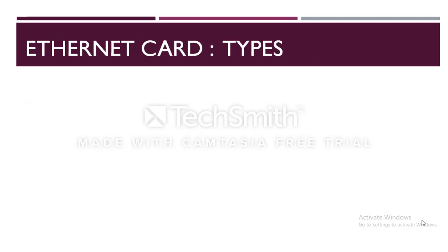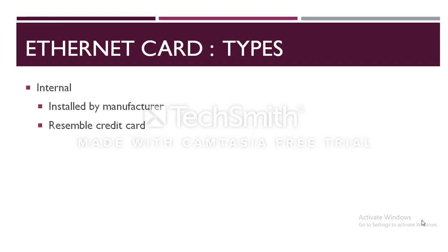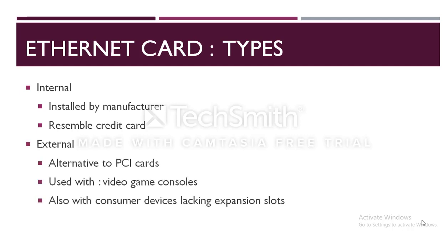Newer Ethernet cards are installed usually by the manufacturer inside desktop computers and resemble credit cards. These are readily available for laptops and other mobile computers, and insert conveniently into slots on the side or front of the device, though they look more like small boxes than cards. External USB Ethernet adapters also exist, which are a convenient alternative to PCI cards for desktop computers, and are also commonly used with video game consoles and other consumer devices lacking expansion slots.